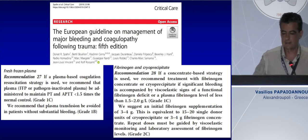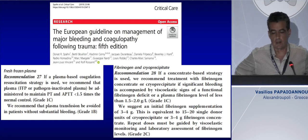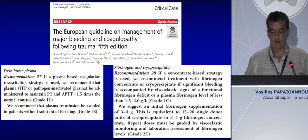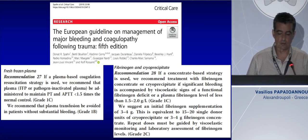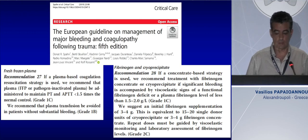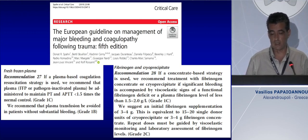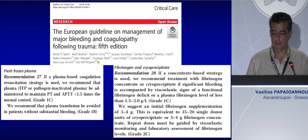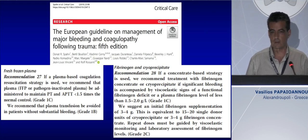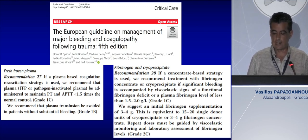Regarding the fifth edition of guidelines for resuscitation and treatment of hemorrhagic shock: for a plasma-based coagulation resuscitation strategy, guidelines remain the same. We need a PT or PTT less than 1.5 times the normal control, and transfuse fresh frozen plasma only in cases of substantial bleeding. Regarding viscoelastic techniques, we can use them to evaluate fibrinogen functional deficit, but we need a plasma fibrinogen level of at least 1.5 to 2 grams per liter.